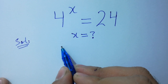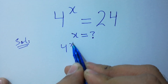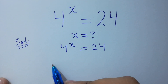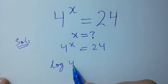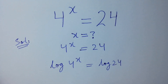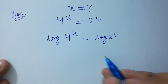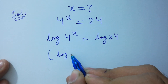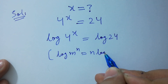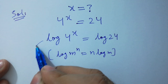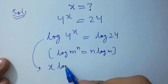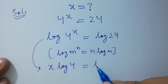We have 4 to the power x equal to 24. To solve this, take log on both sides. Since log m to the power n equals n log m, it will be equal to x log 4 equal to log 24.